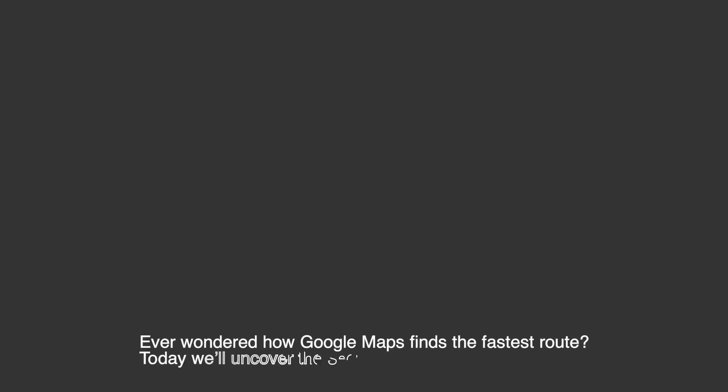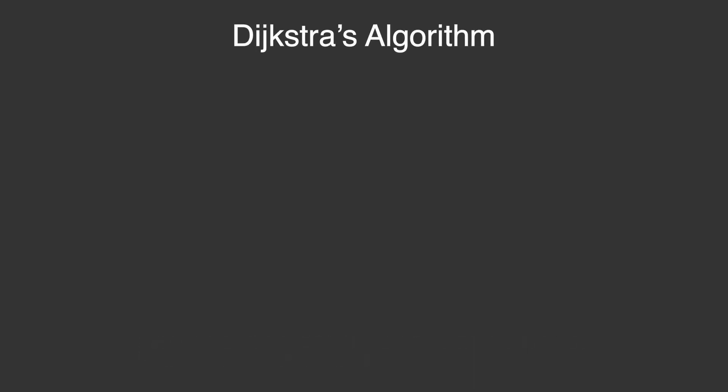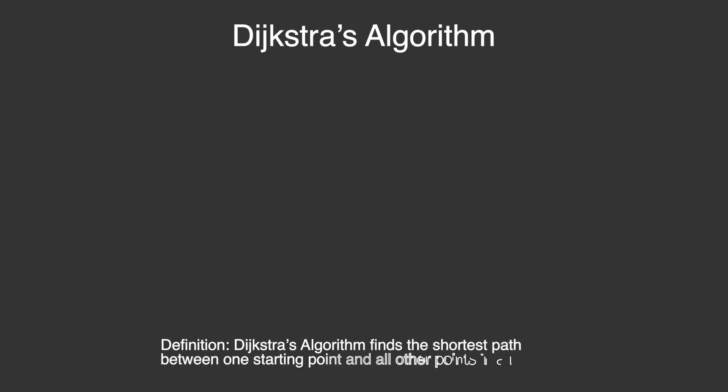Ever wondered how Google Maps instantly finds the fastest way to your destination? Today we'll uncover the secret behind it, and also look at a brand new algorithm that might change the future. This is Dijkstra's algorithm.